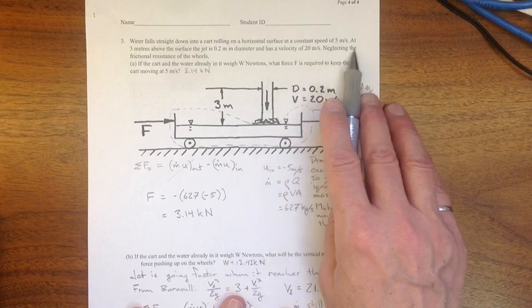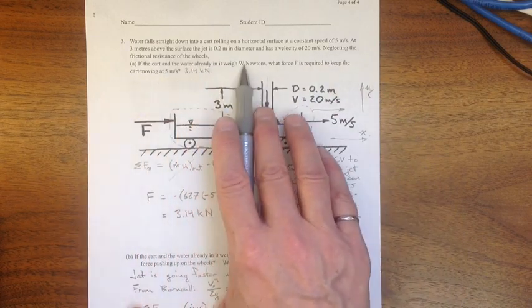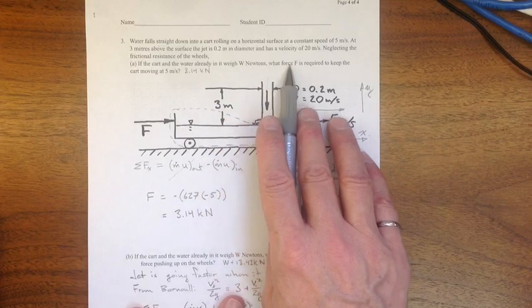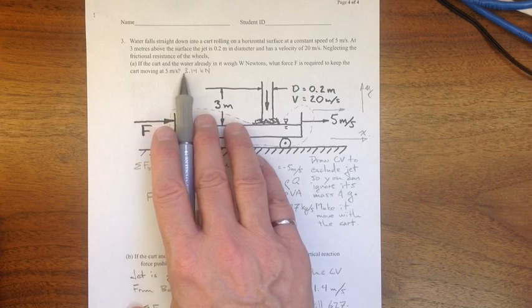And it says, neglecting the frictional resistance of the wheels, if the cart and the water already in it weigh W newtons, what force F is required to keep the cart moving at five meters per second?